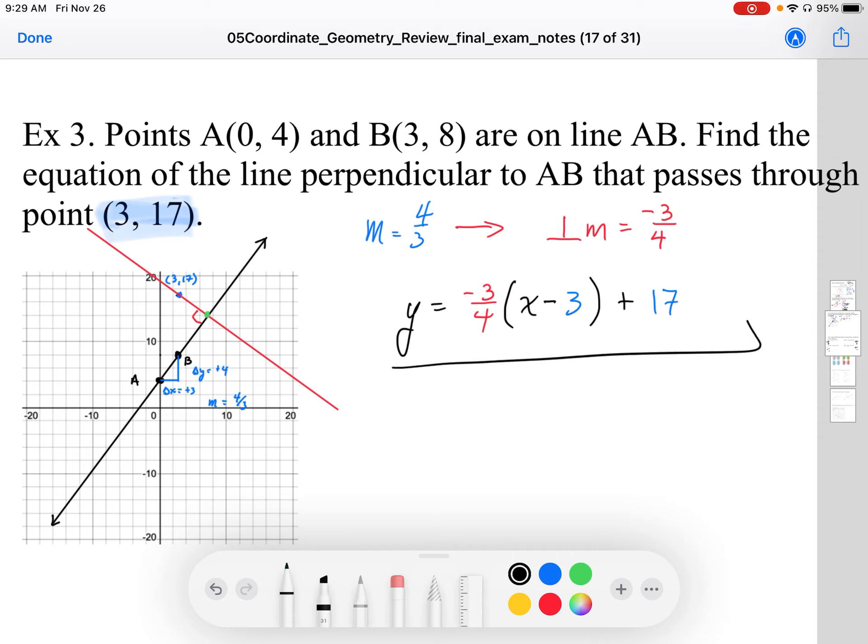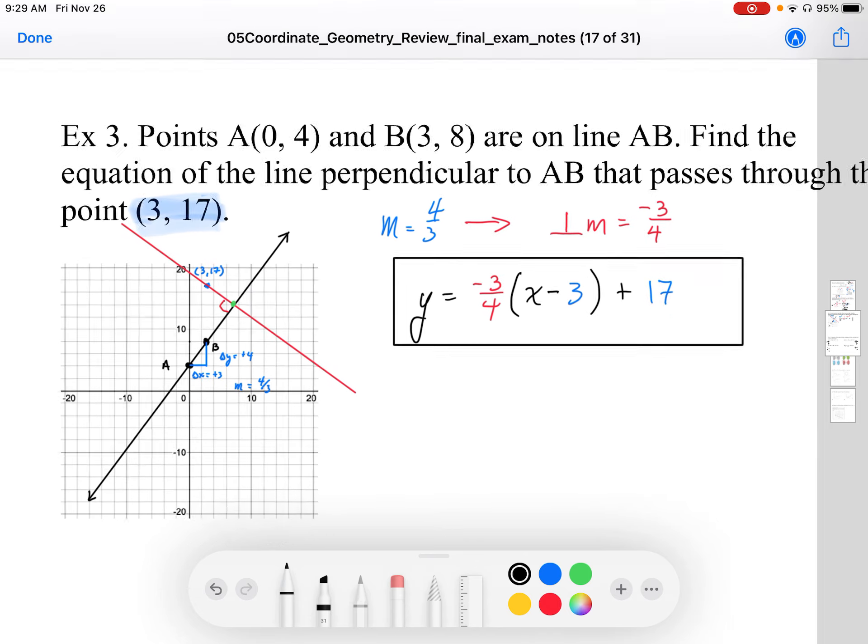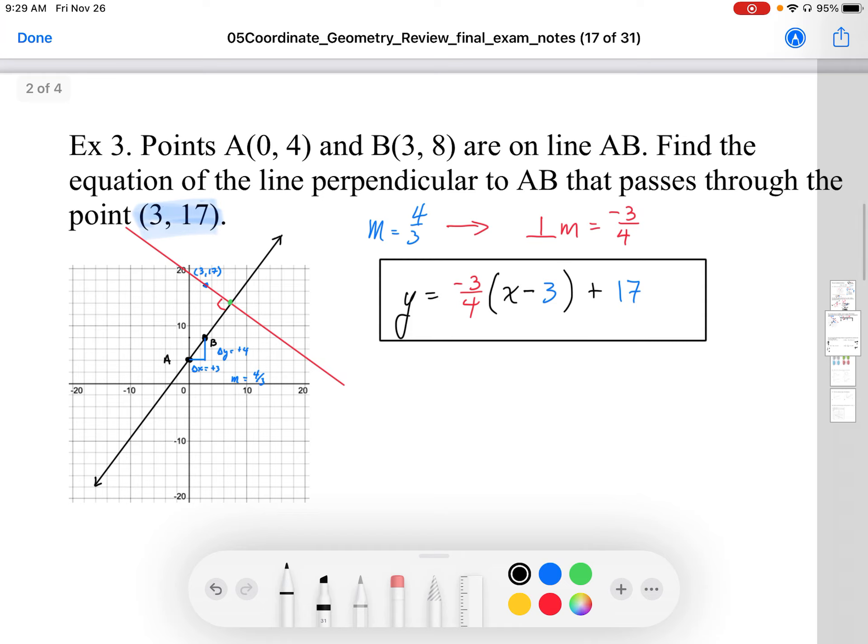I'm just going to leave it in point-slope form. It doesn't ask for any particular form, so I'm just going to leave it in point-slope form because that's the most convenient. So that's the equation of the line perpendicular—that red line that is perpendicular to the black line generated by the points (0, 4) and (3, 8).